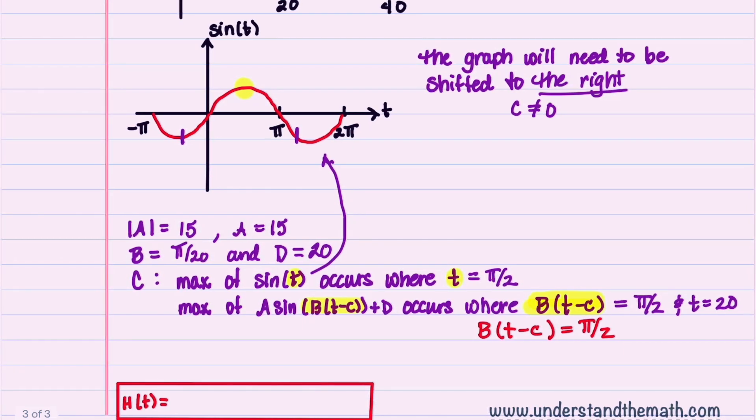Our B is π over 20. Our t is 20 minus C equals π over 2. The π's will cancel out and we get 20 minus C equals 20 over 2, which is 10. So that tells us that C is equal to 10.